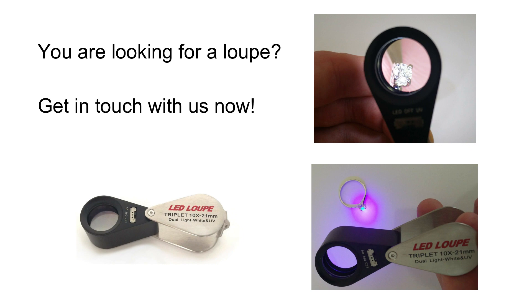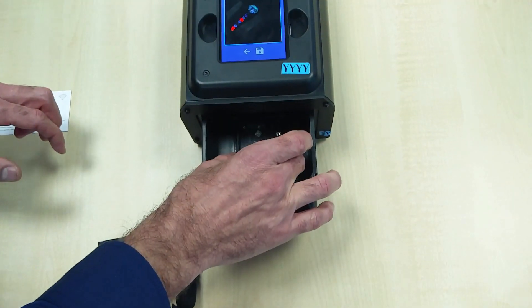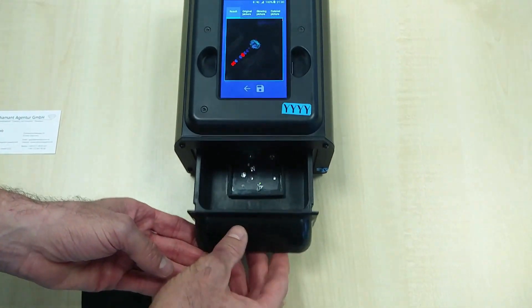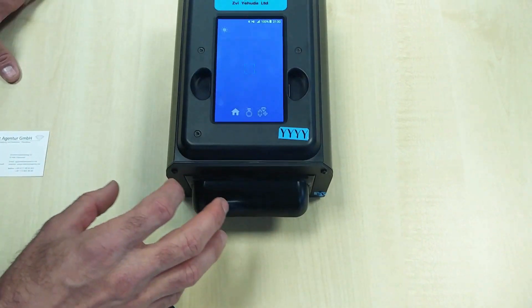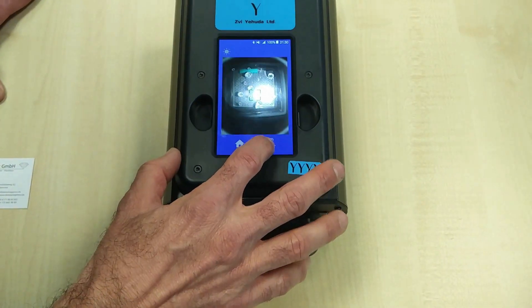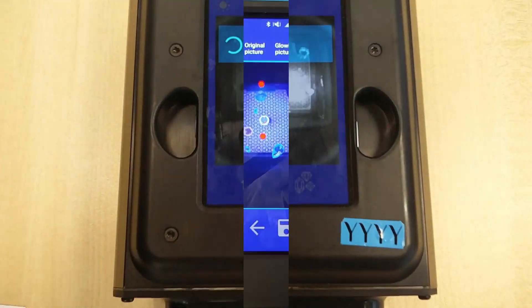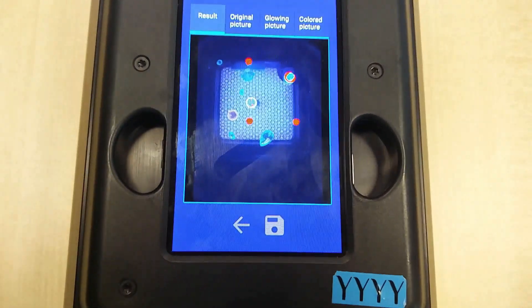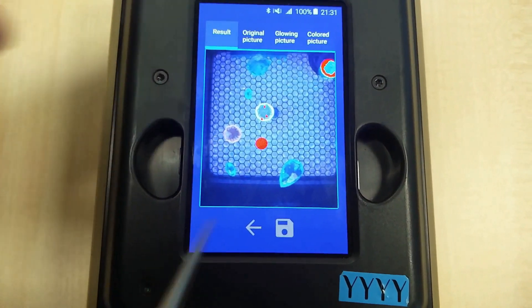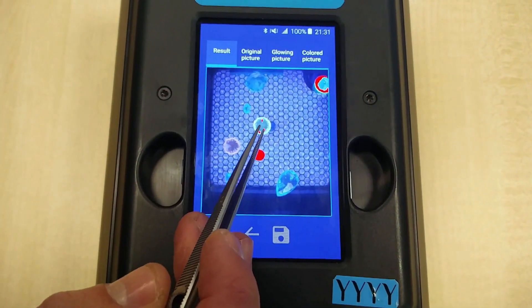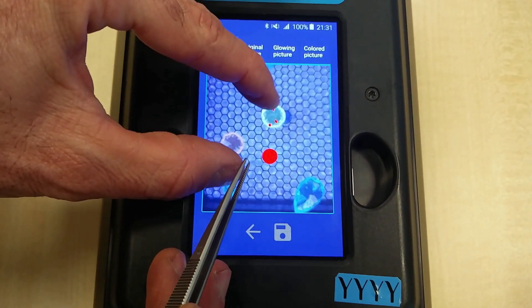Even though lab-grown diamonds are still rather scarce in the market, testing devices that analyze the stone within seconds are already customary in the trade today. In addition to that, gemological institutes have versatile means and technological equipment to identify every stone. The analysis in the laboratory even examines differences on the atomic level.